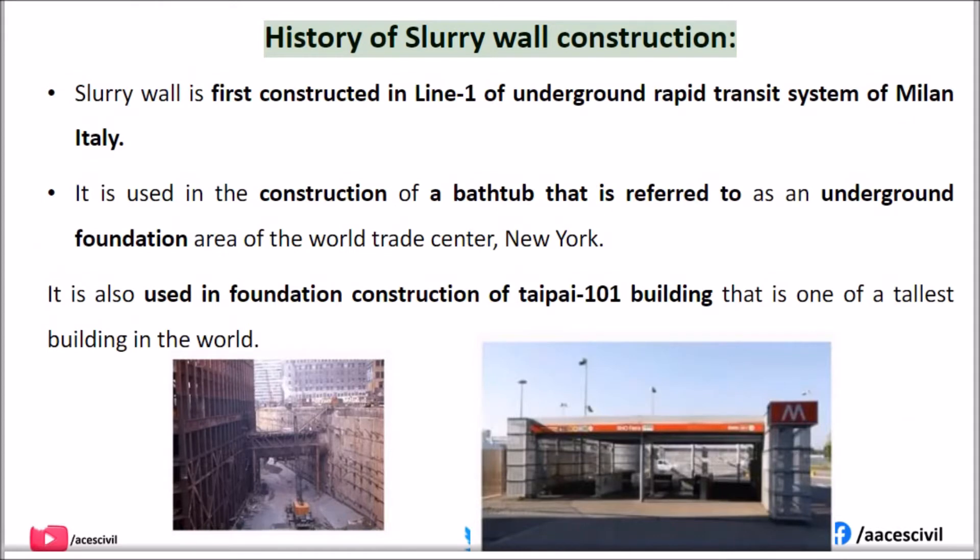History of slurry wall construction: The slurry wall was first constructed in Line 1 of the Underground Rapid Transit System of Milan, Italy.